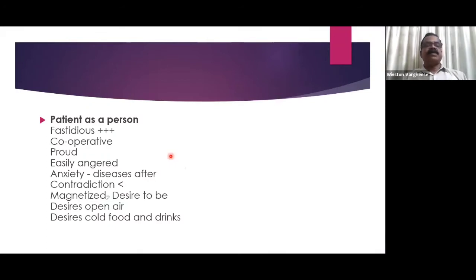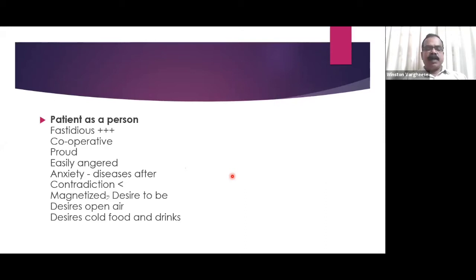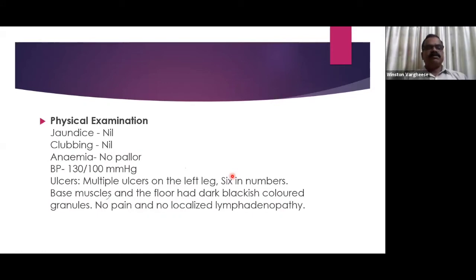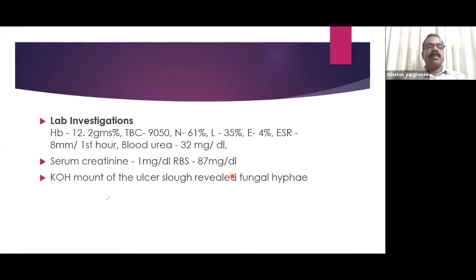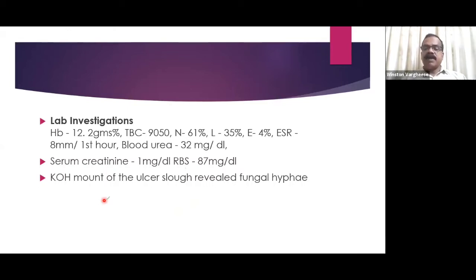As a person he was very fastidious, cooperative, proud, easily angered when contradicted, with increased anxiety after the illness. He desired open air, cold food and drinks. On physical examination, 16 multiple ulcers were found on the left leg over the gastrocnemius muscle, with a dark blackish-colored granular floor, no pain, and no localized lymphadenopathy. KOH mounting of the ulcer material revealed the presence of fungal hyphae.